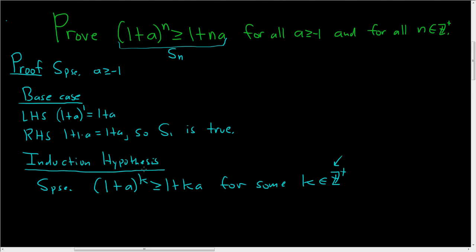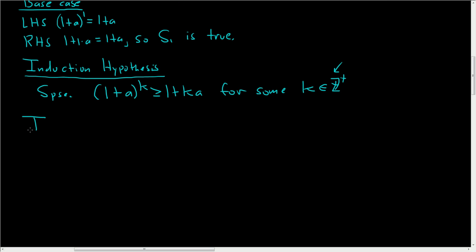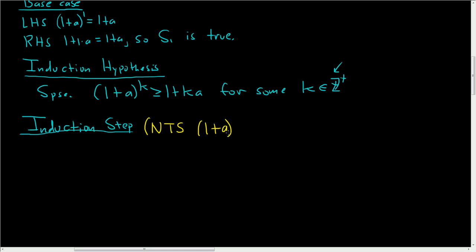Now let's do the induction step — this is the meat of the proof. It helps to know where you're going before you start, so let's write down what we need to show. We need to show that our statement is true when n equals k + 1. That is, we need to show that (1 + a)^(k+1) is greater than or equal to 1 + (k+1)a.